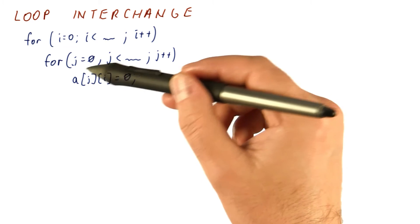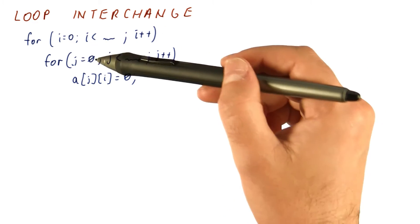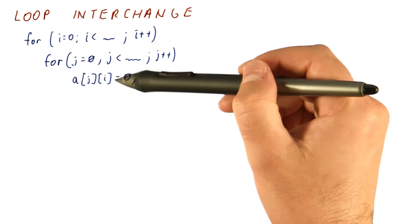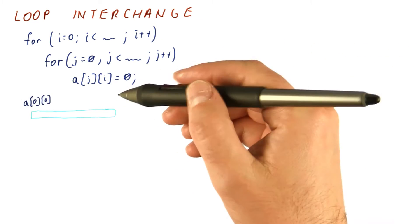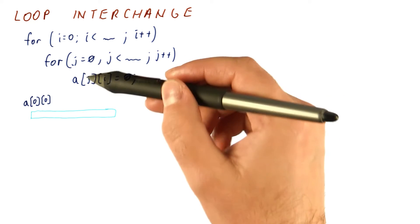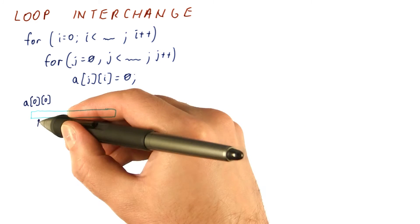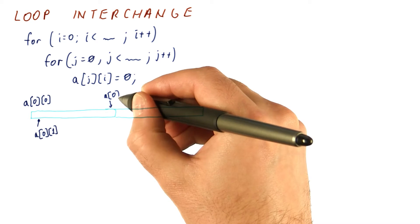So suppose that we are initializing a matrix like this by having an outer loop and an inner loop, and then we initialize the element. Because the layout of this matrix in memory, if it's a C array, is such that it begins with A00.